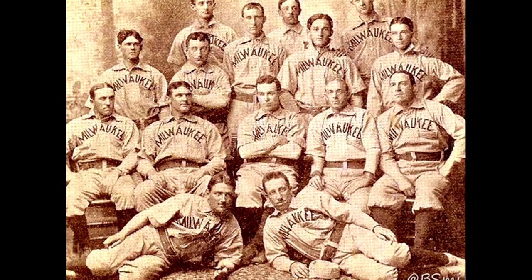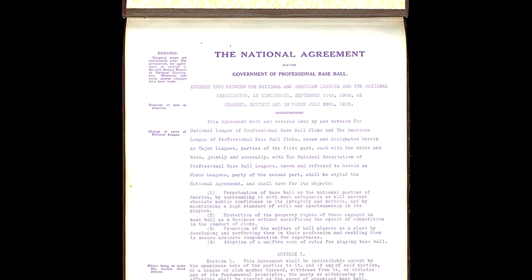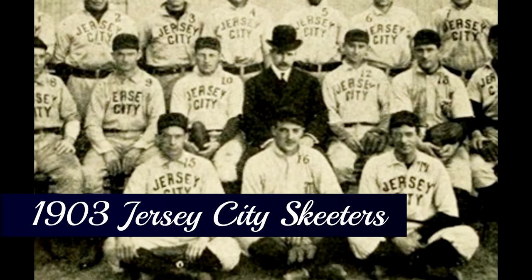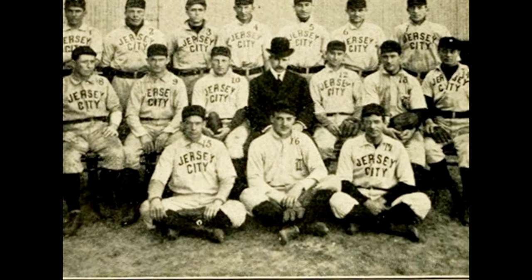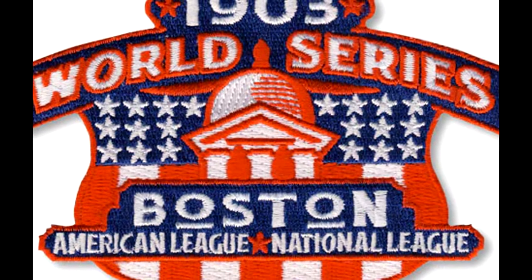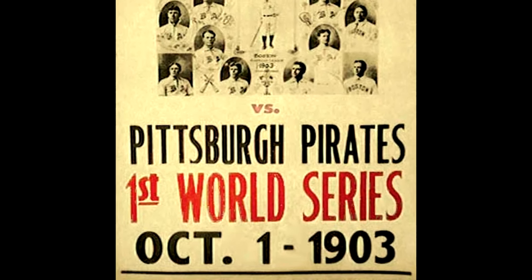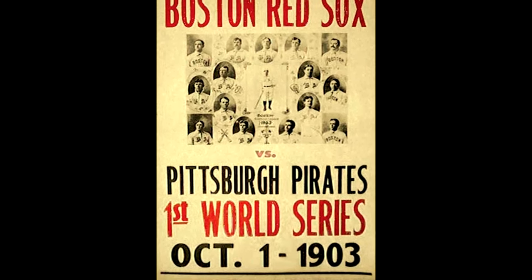The leagues would often get into disputes regarding the best players in the country and would often engage in legal proceedings. This would lead to the National Agreement of 1903, which formalized relations between the two major leagues and also how the two major leagues would interact with the nation's minor leagues. The two leagues combined would establish the name Major League Baseball, or MLB. This agreement would also lead to the first World Series, a series of championship games between the champions of the American League and the champions of the National League, to determine the best baseball team overall.